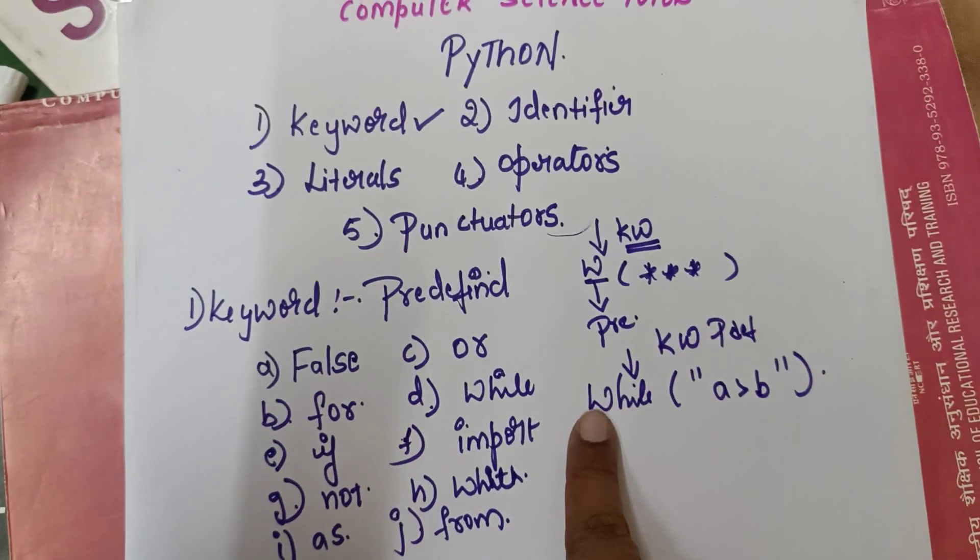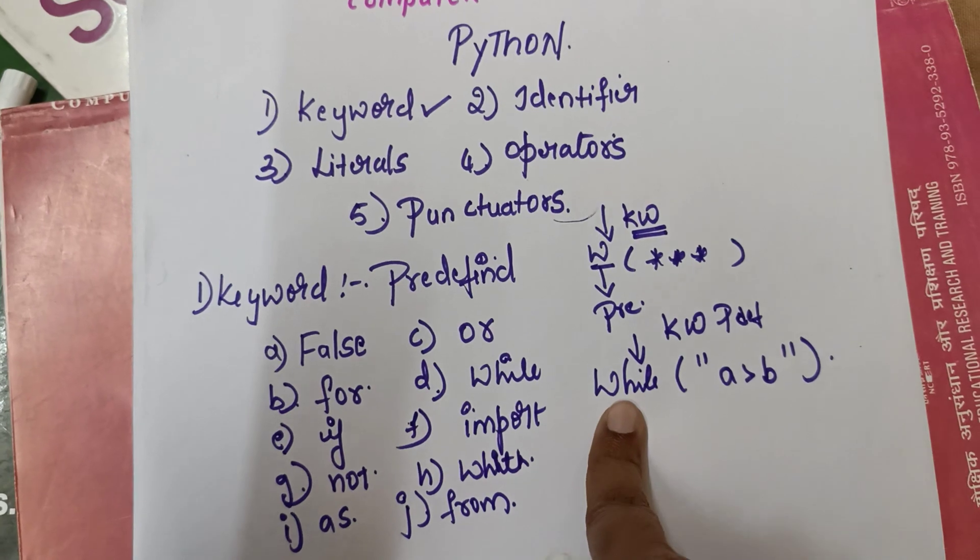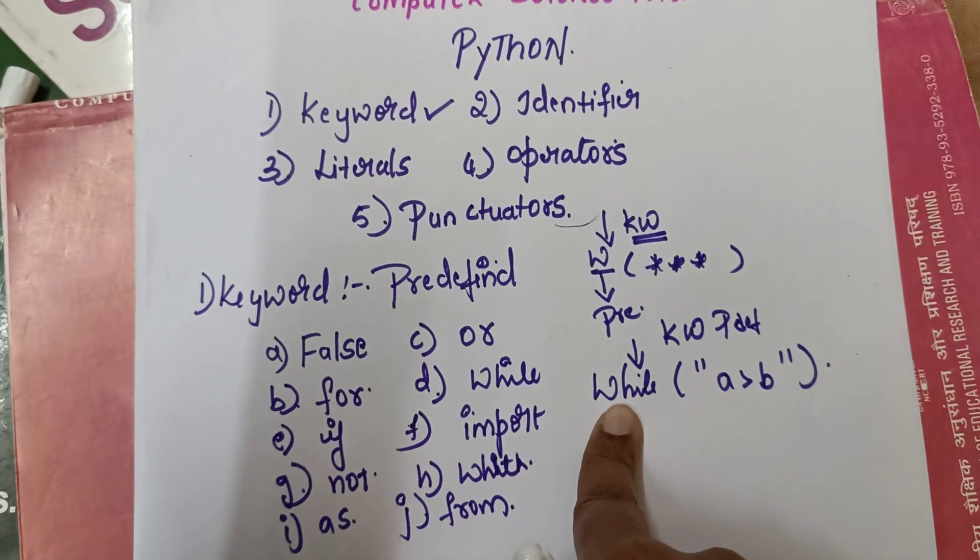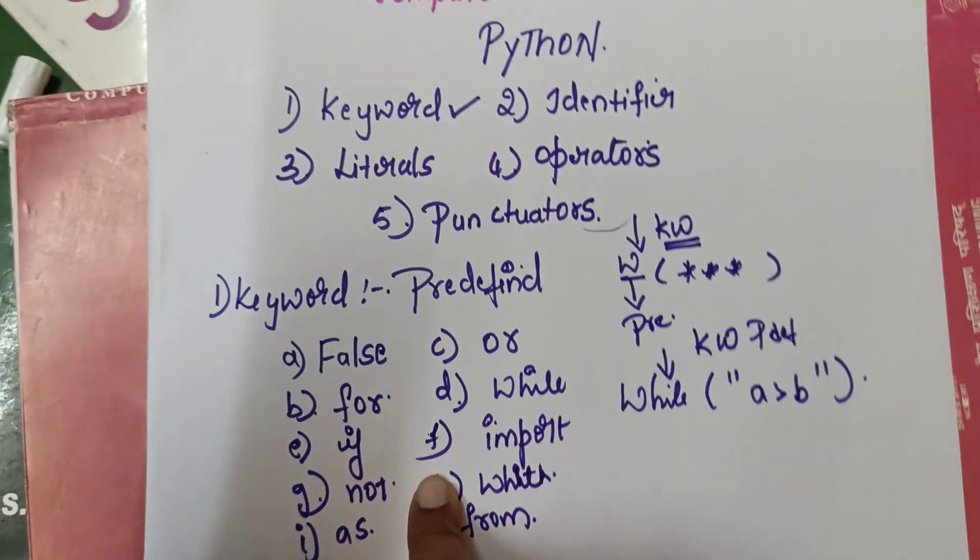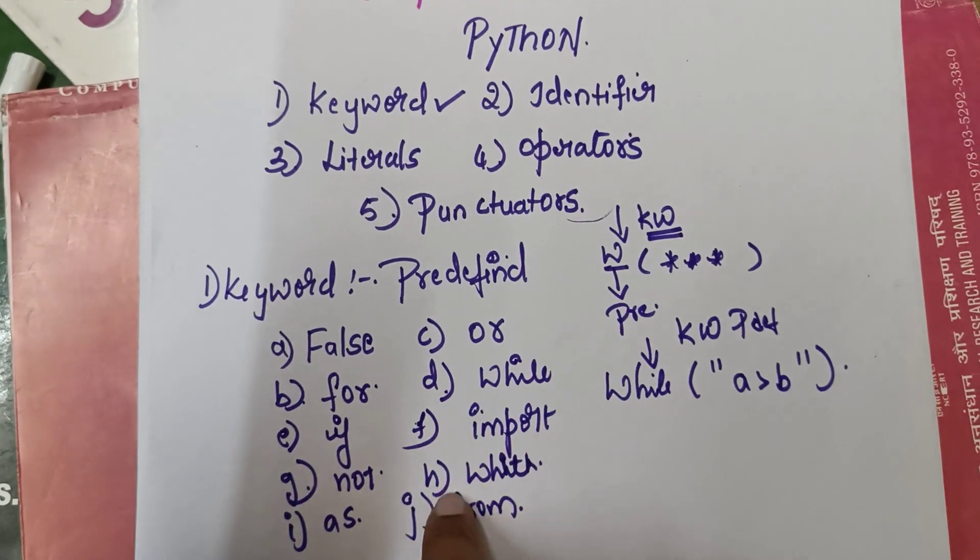This is the keyword. Like this, we are going to use all these things as predefined words. Like this, many more keywords are there. I am just explaining basic keywords.